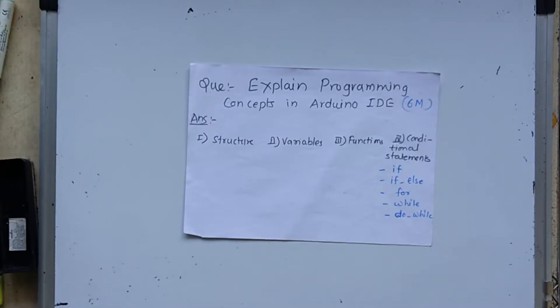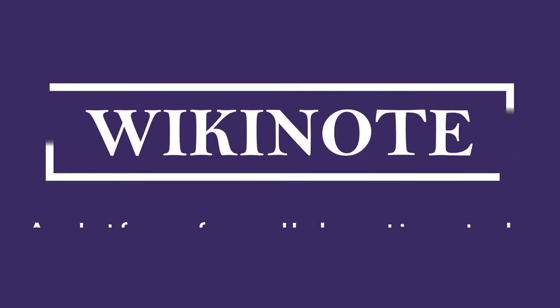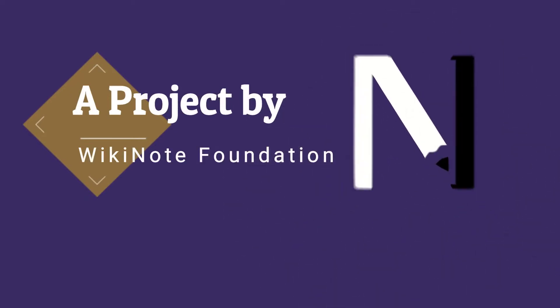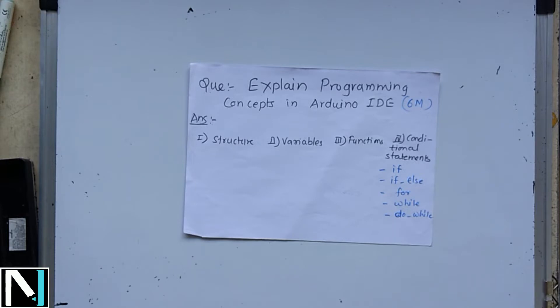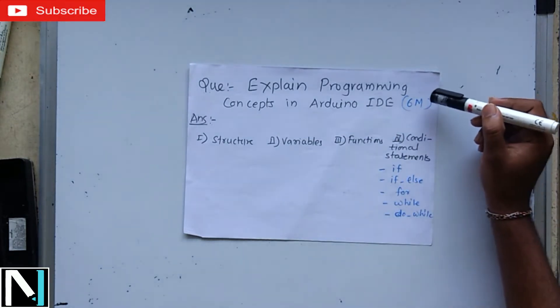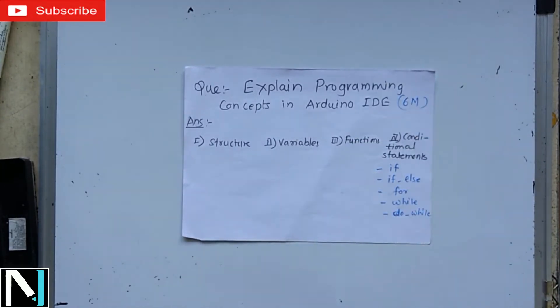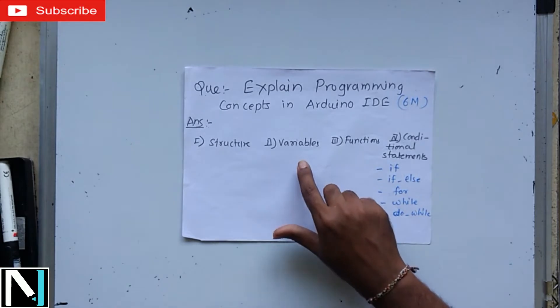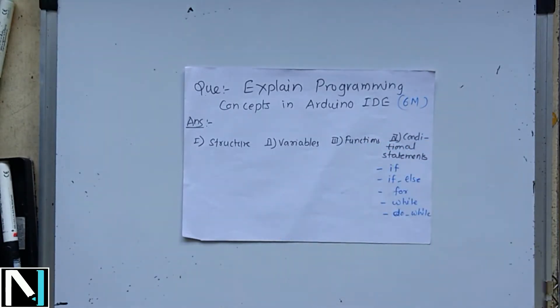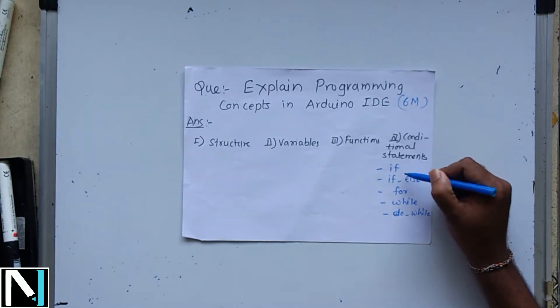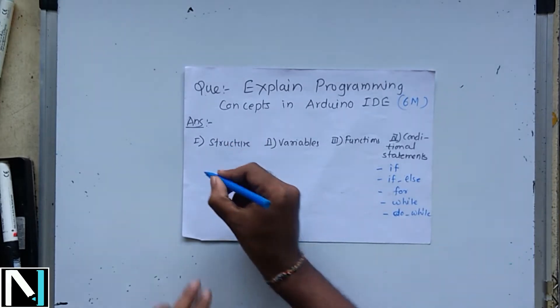Hello friends, it's Sujit Waag. You are watching the Wiki Note channel. Welcome to the triple E question answer video tutorial series. In this video tutorial we are going to explain the question: explain the programming concepts in Arduino IDE software. This question can be asked for six marks. There are four types of programming concepts in Arduino IDE: first is structure, then variables, functions, and fourth is conditional statements. Conditional statements are divided into if, if-else, for, while, and do-while.